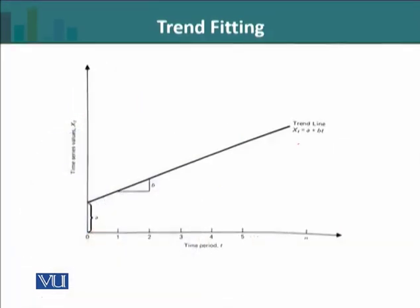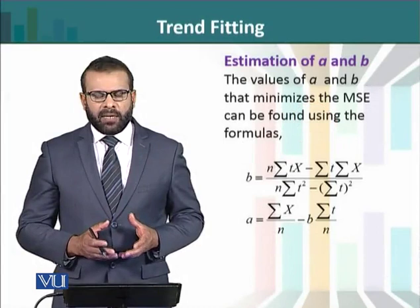اگر ہم graphically اس model کو دیکھیں تو اگر b positive ہو تو ہمیں ایک increasing line ملے گی۔ یہ line y-axis کو جہاں cut کرتی ہے وہ parameter a کو indicate کرتا ہے، اور unit time change کے ساتھ جو change آتی ہے وہ b سے ظاہر ہوتی ہے۔ اگر time series increasing ہو تو b positive آئے گا، اور decreasing ہو تو b negative آئے گا۔ اس fitted line کو trend line کہیں گے کیونکہ یہ time series کی long term movement کو capture کرتی ہے۔